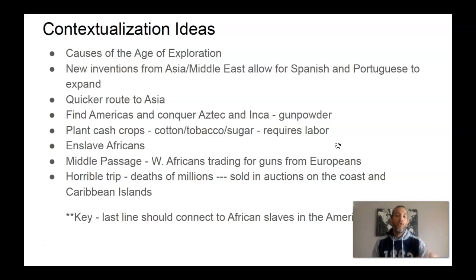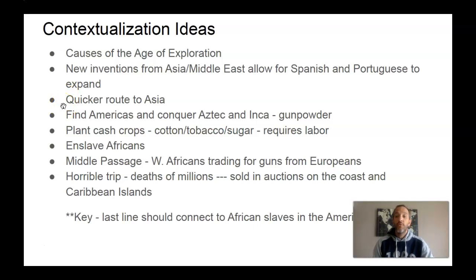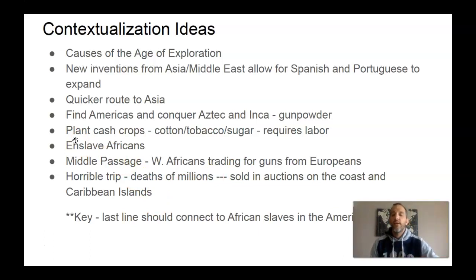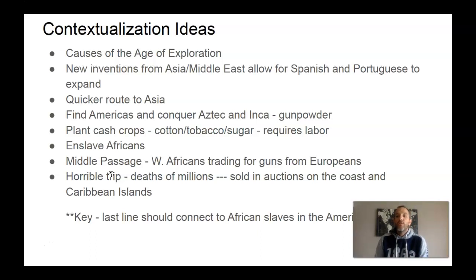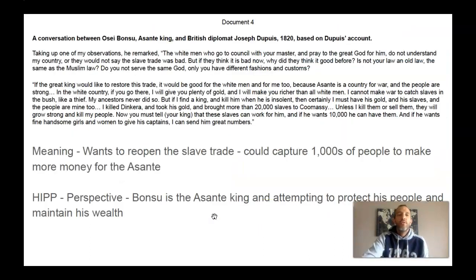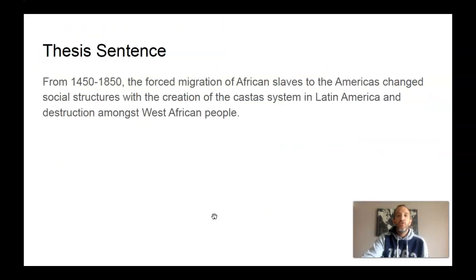Here are bullet points of stuff I saw people write that I thought were good. You could talk about the causes of the Age of Exploration: new inventions coming from Asia and the Middle East which allowed the Spanish and Portuguese to expand quicker, Europeans looking for a quicker trade route to Asia, and bumping into the Americas. They conquered the Aztec and Inca because they had gunpowder, planted cash crops — cotton, tobacco, sugar — which required labor, and brought enslaved Africans forced to come to the Americas. You could also talk about the Middle Passage, that journey by the West Africans coming to the Americas, and that West Africans were trading slaves for guns with the Europeans. The key is that the last line of your contextualization should connect to African slaves in the Americas and lead into your thesis on evaluating the extent.